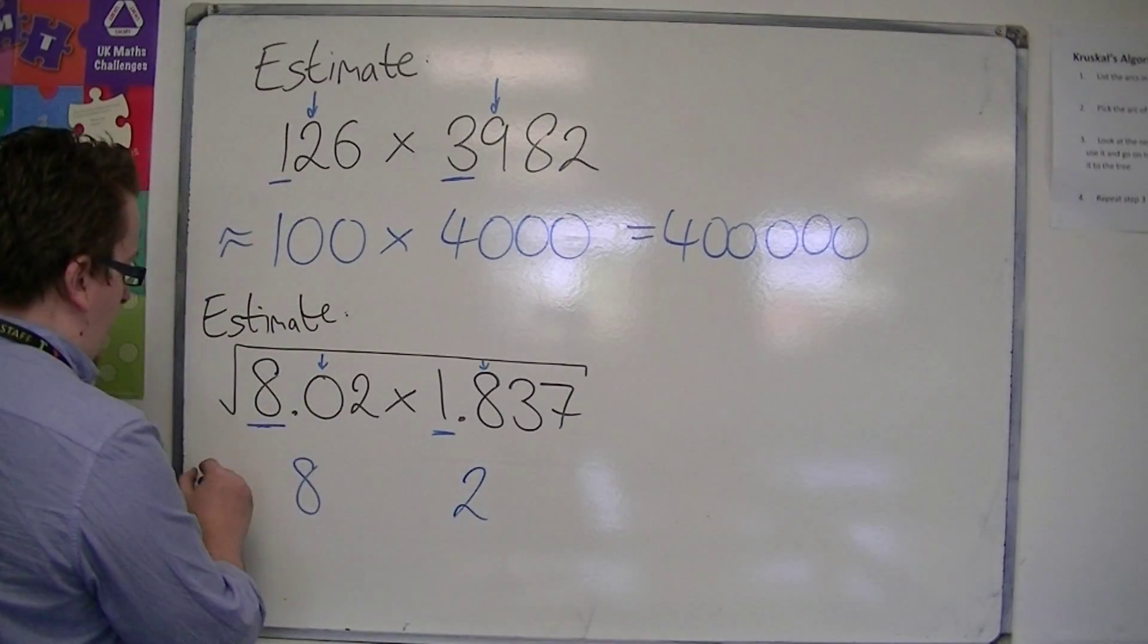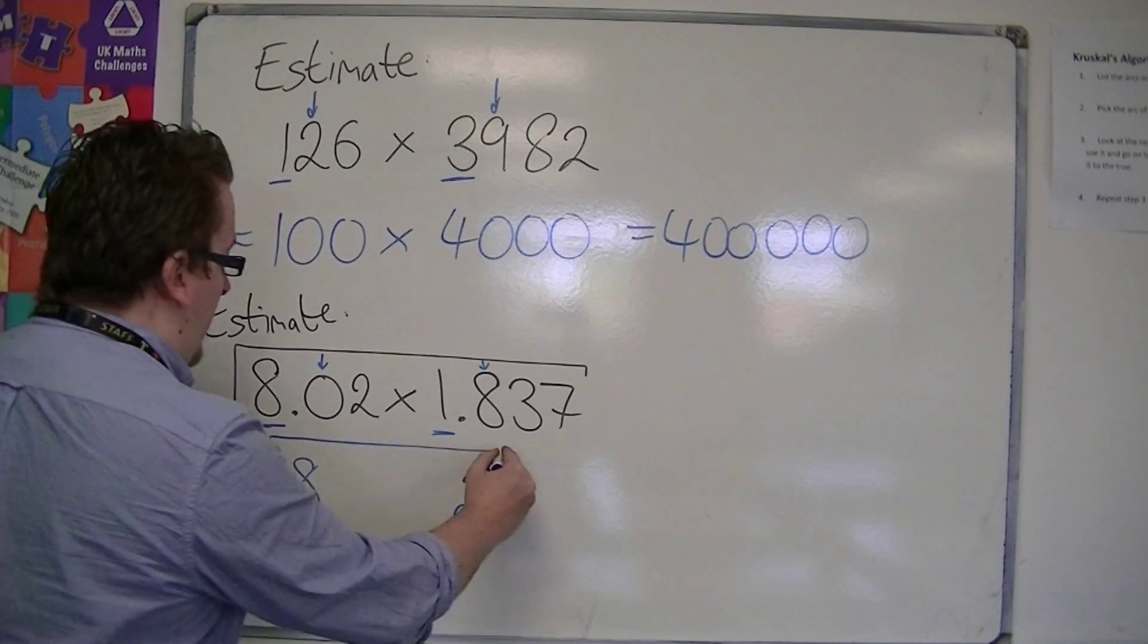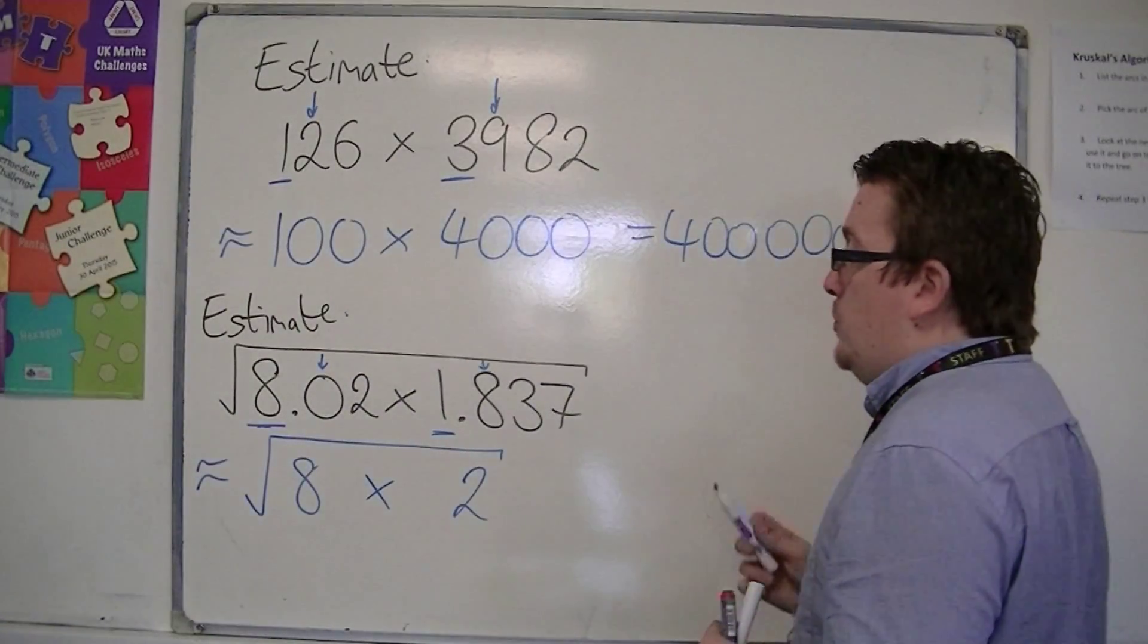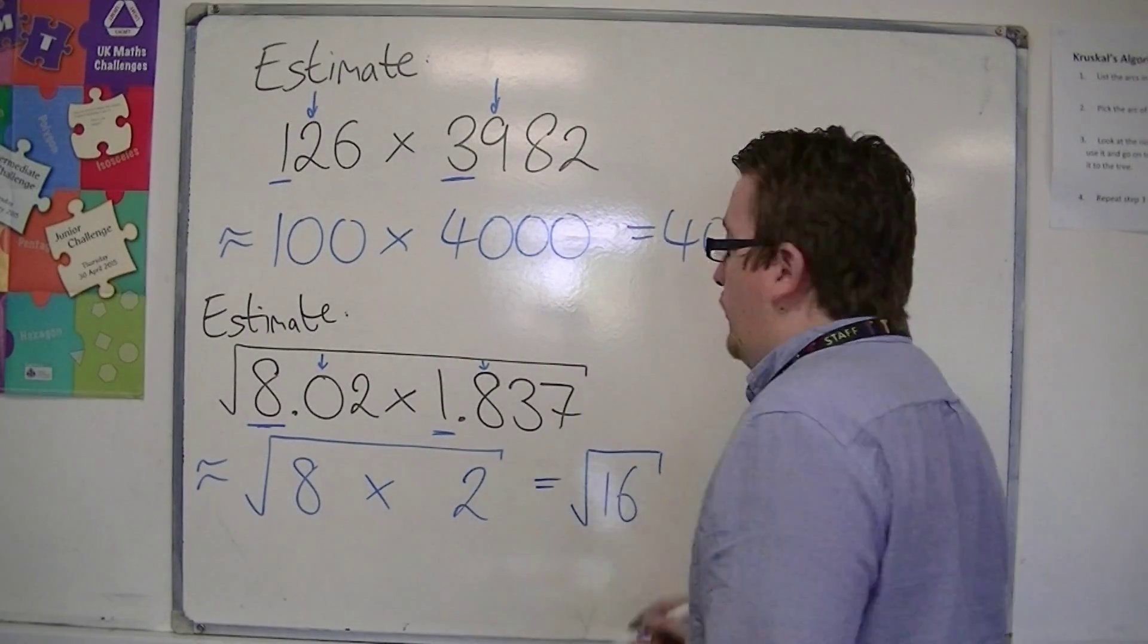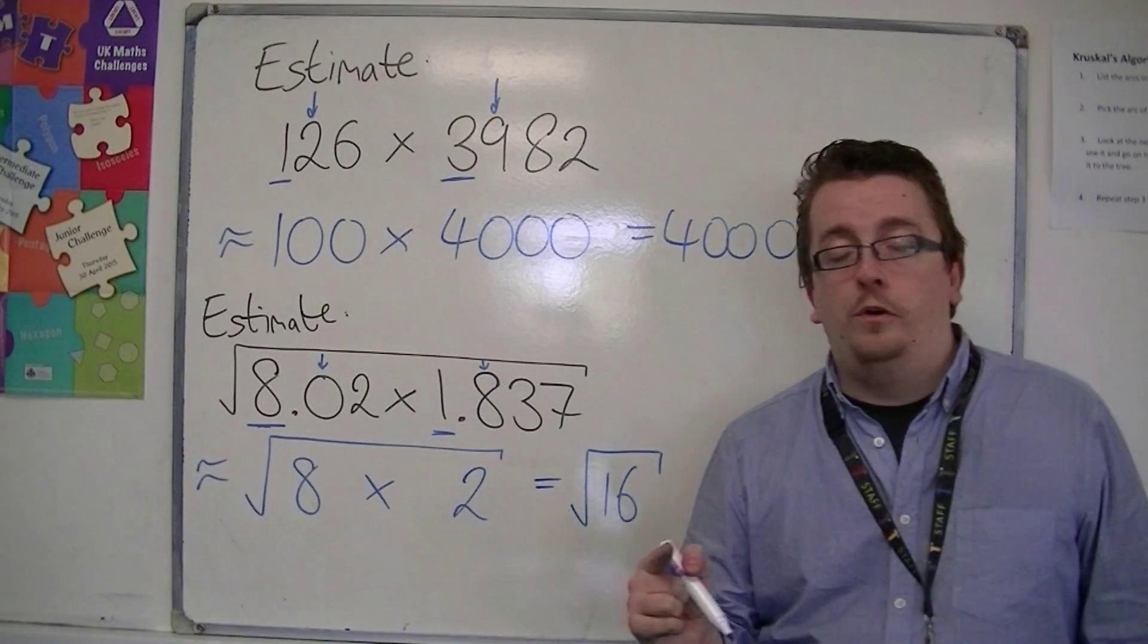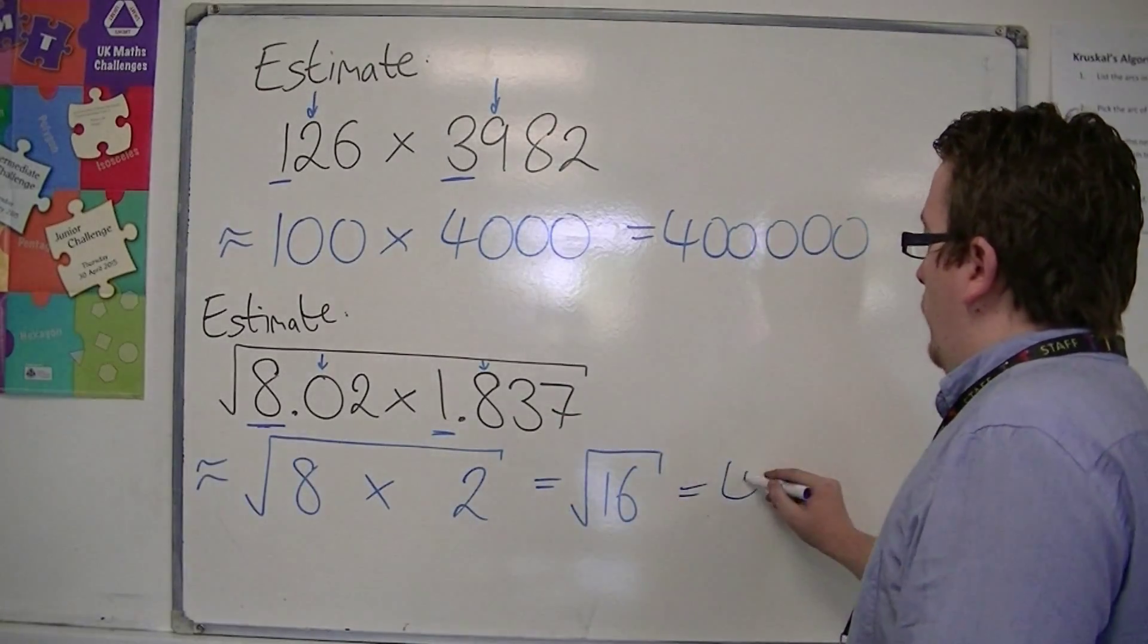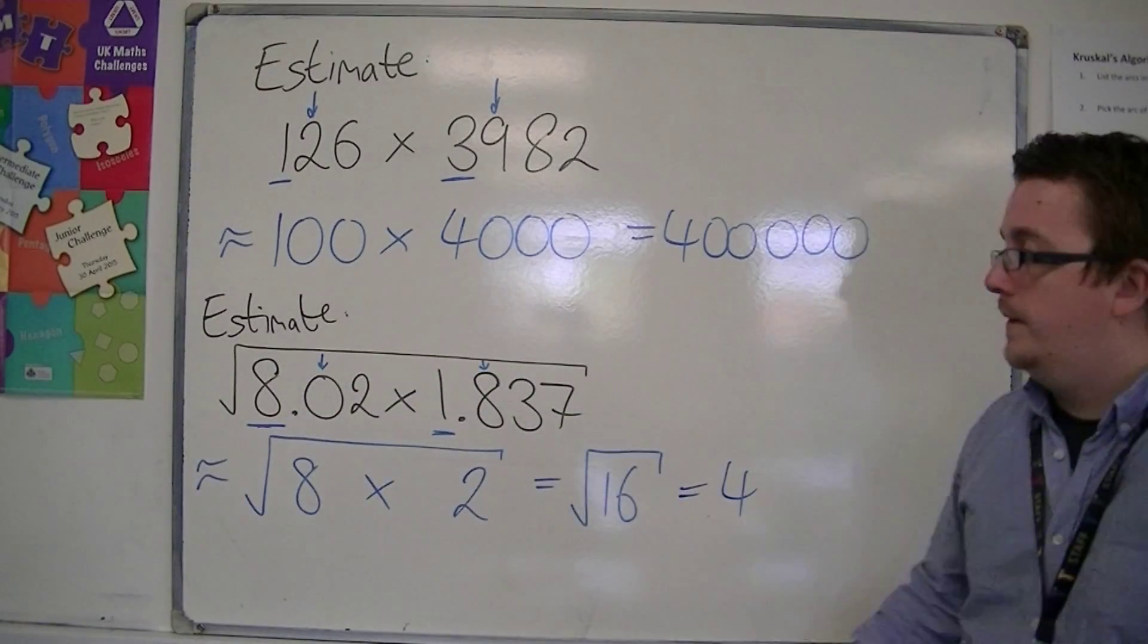So I'm actually looking at estimating this to be approximately equal to the square root of 8 times 2. Now 8 times 2 is 16, and the square root of 16 is 4 because 4 times 4 is 16. So I can say that the answer to this is approximately 4.